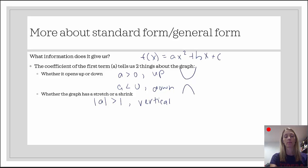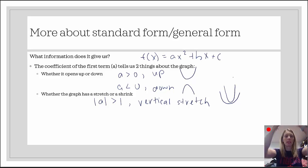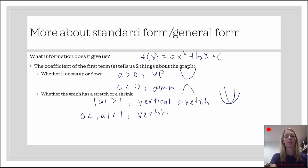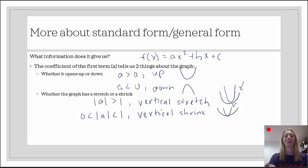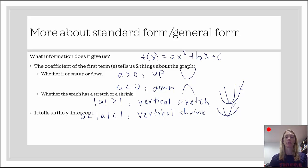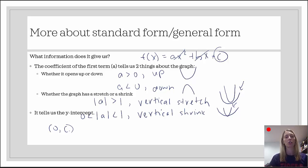A vertical stretch means the parabola is closer to the y-axis — it gets pulled up. If the absolute value of a is between 0 and 1, there is a vertical shrink, meaning the parabola gets wider and further from the y-axis. Standard form also quickly tells us the y-intercept: plug in zero for x, and everything cancels except c, so the y-intercept is the point (0, c).